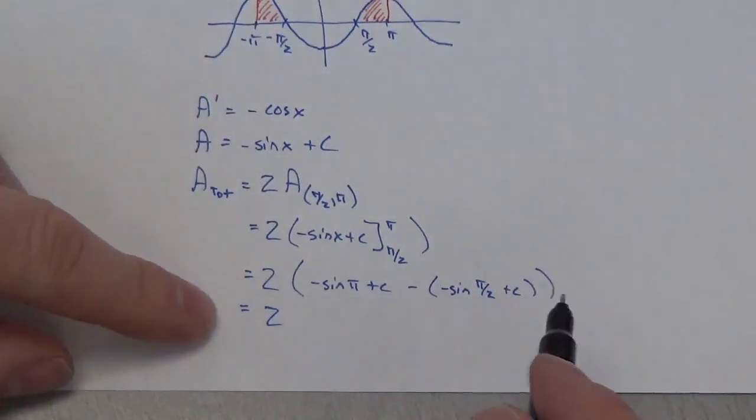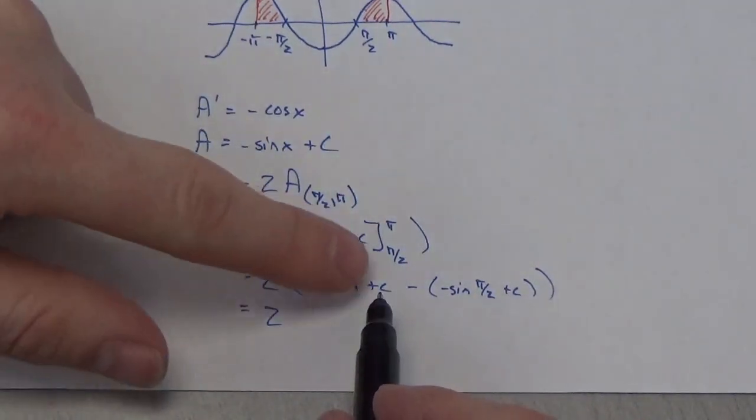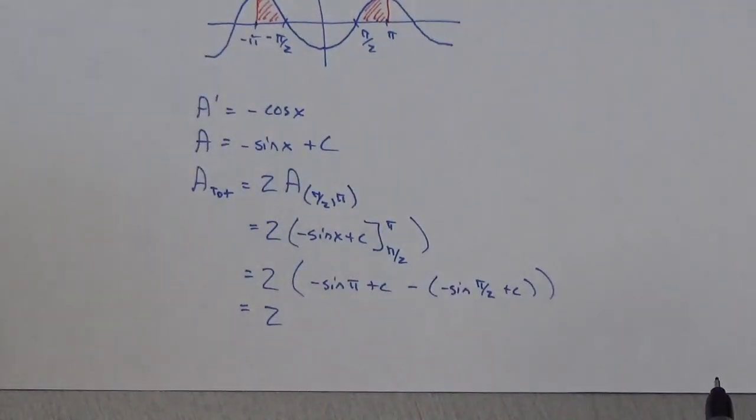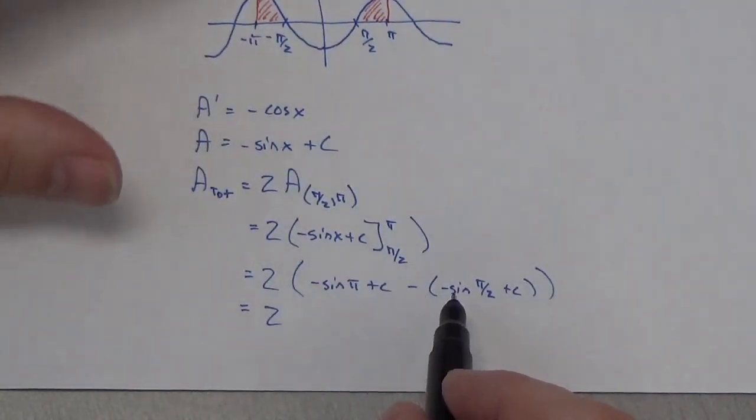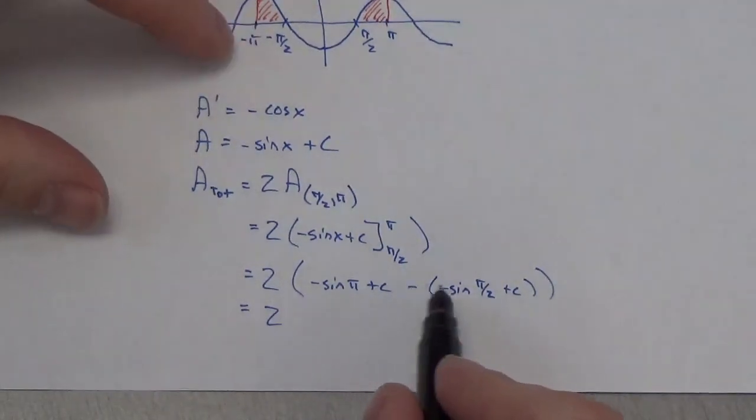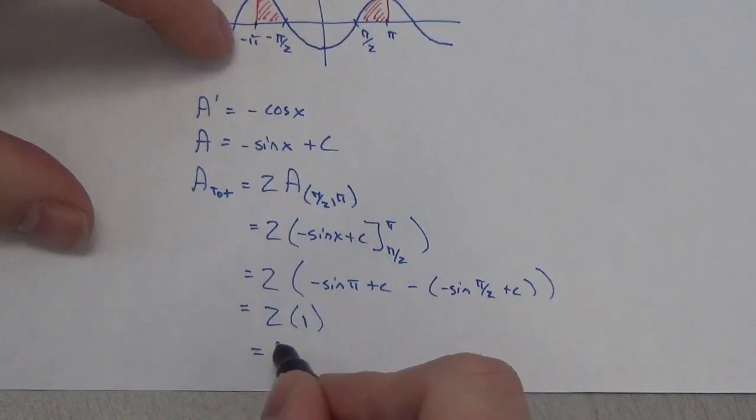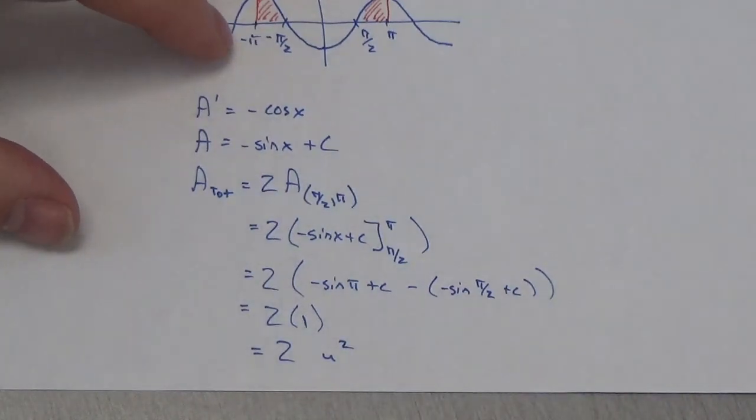What do we got here? Well, sine of pi is going to be zero. I know that my c's are going to cancel because I'm using that same function, and so it's going to be the same value of c. So, sine of pi over 2 is going to be 1, and because of those two negatives, it's going to be a positive one. So, basically, this just becomes 2 units squared.